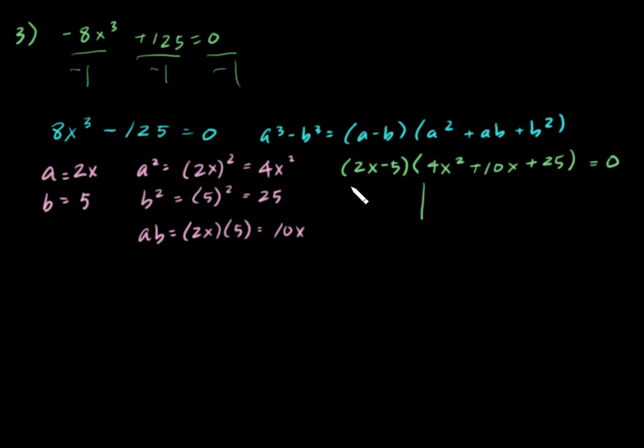Let's go ahead and split it right here. We have 2x minus 5 equaling 0, and 4x squared plus 10x plus 25 equaling 0.